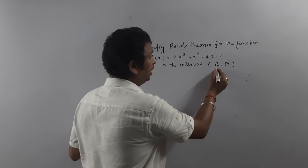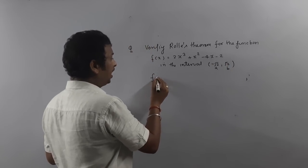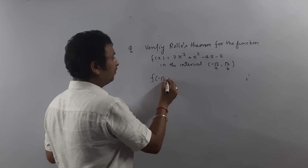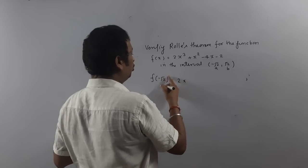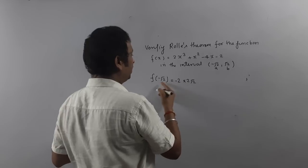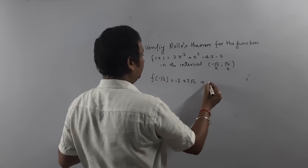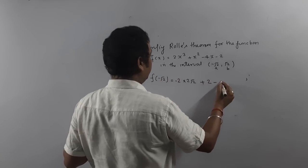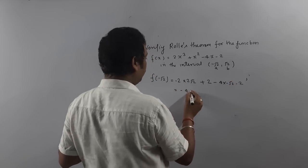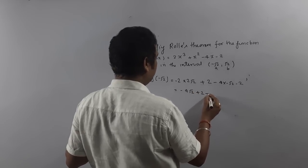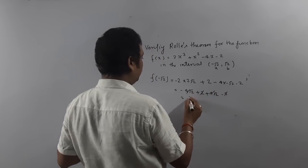What is the value of a here? Minus root 2. What is the value of b? Plus root 2. So we compute f(−√2): substituting x = −√2, the terms simplify — 2x³ gives −2·2√2, x² gives 2, −4x gives 4√2, and −2 gives −2. Computing f(−√2) gives a value of 0. Similarly, f(+√2) is also computed.